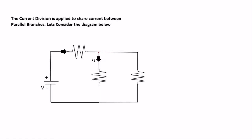When the current gets to a node it divides. The current moving through the first branch is i1, passing through resistor R1. The current also divides through another branch making i2, passing through resistor R2. To find the current using current division, you must make sure the diagram has been reduced to this form.